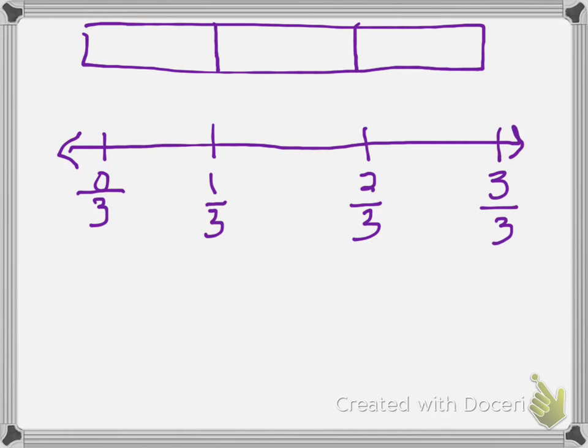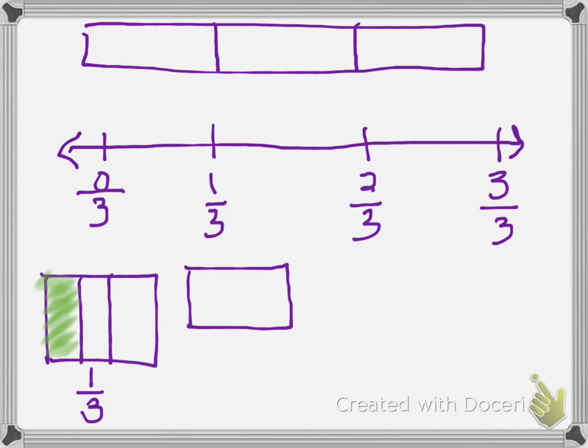If I want to find my equivalent to one-third again, I'm going to draw a picture again. So I have, right here, my one-third. When I find an equivalent fraction to my one-third again, I'm going to take my one-third.